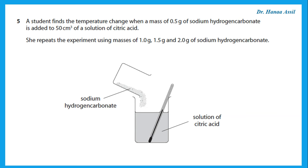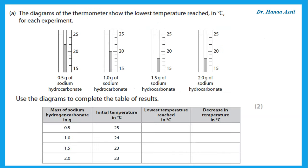A student finds the temperature change when 0.5 grams of sodium hydrogen carbonate is added to 50 cm³ of a solution of citric acid. She repeats the experiment using masses of 1 gram, 1.5 grams, and 2 grams of sodium hydrogen carbonate. The diagrams of the thermometer show the lowest temperature reached. Notice that the temperature is lower — it goes down — meaning we are talking about an endothermic reaction. Use the diagrams to complete the table of results.